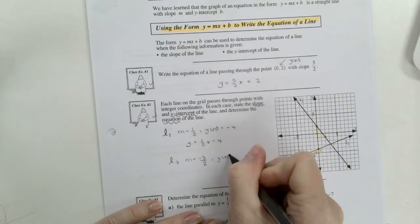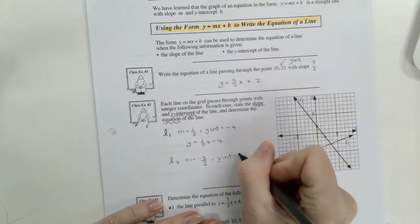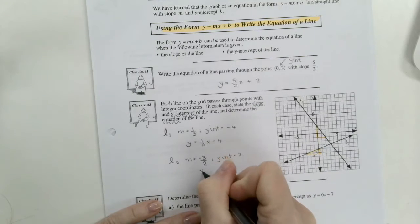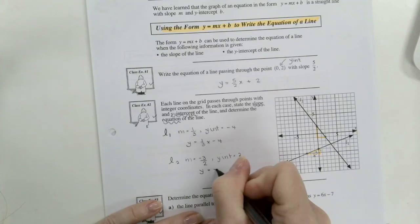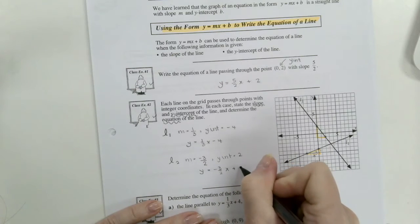Y-intercept is 1, 2. And the equation of our line, y equals negative 3 over 2 x plus 2.